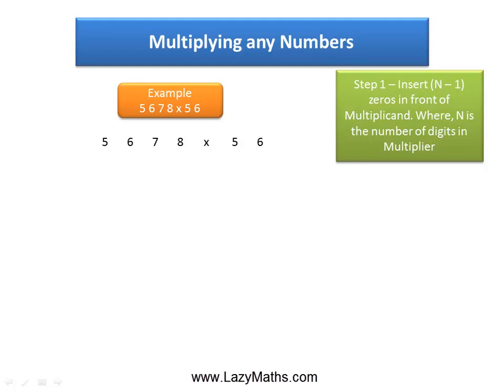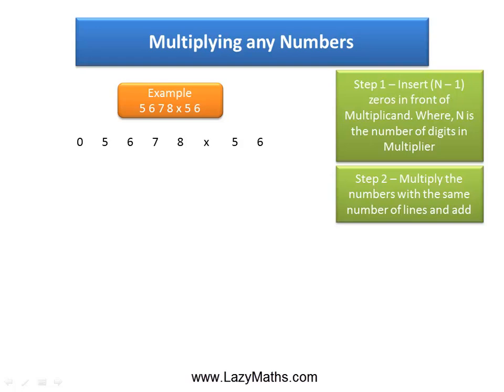So we insert one zero in front of the multiplicand 5,678. The next step is to multiply the numbers with the same number of lines and add them together. We start with 6 times 8, which gives 48. We put 48 in the carryover format with 4 as the carryover and 8 in the ones place.